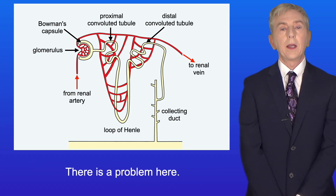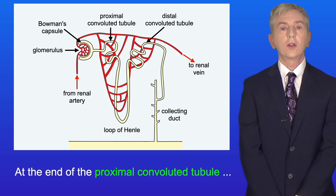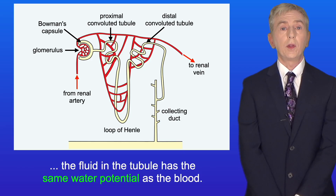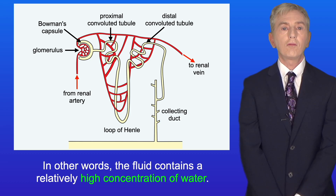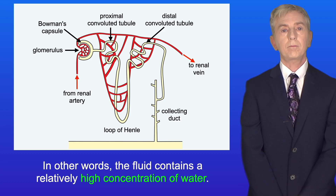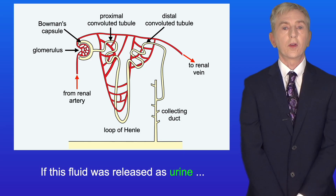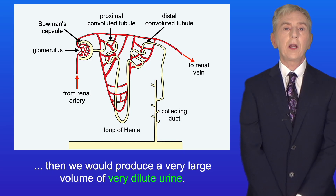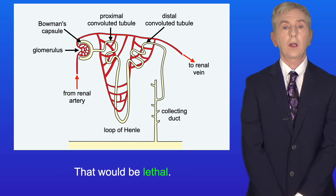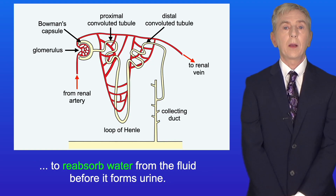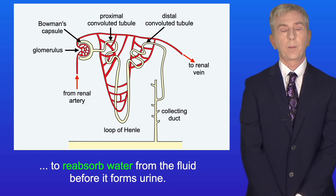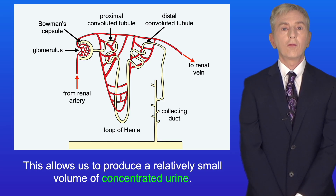Now there is a problem here. At the end of the proximal convoluted tubule, the fluid in the tubule has the same water potential as the blood. In other words, the fluid contains a relatively high concentration of water. Now if this fluid was released as urine, then we would produce a very large volume of very dilute urine, and that would be lethal. So the loop of Henle and the collecting duct work together to reabsorb water from the fluid before it forms urine, and this allows us to produce a relatively small volume of concentrated urine.